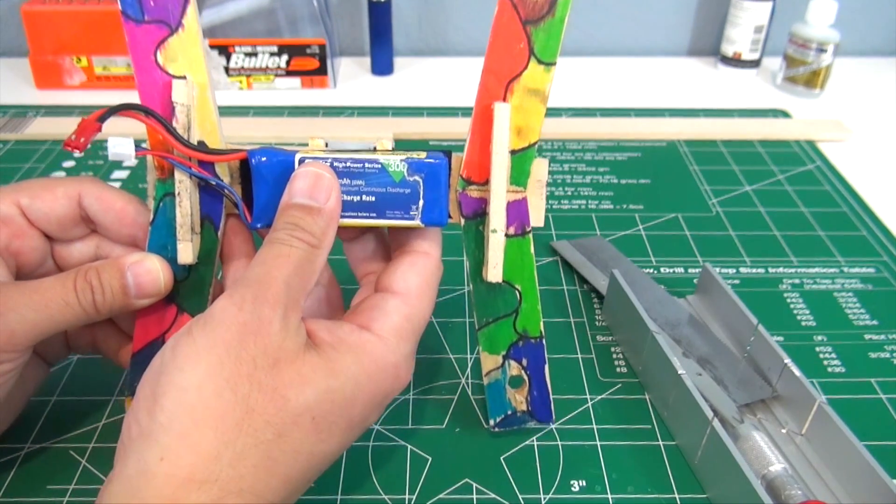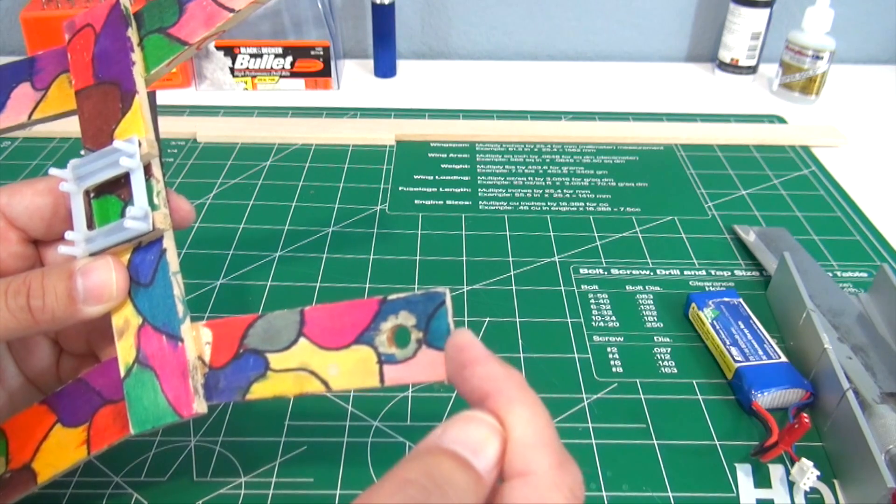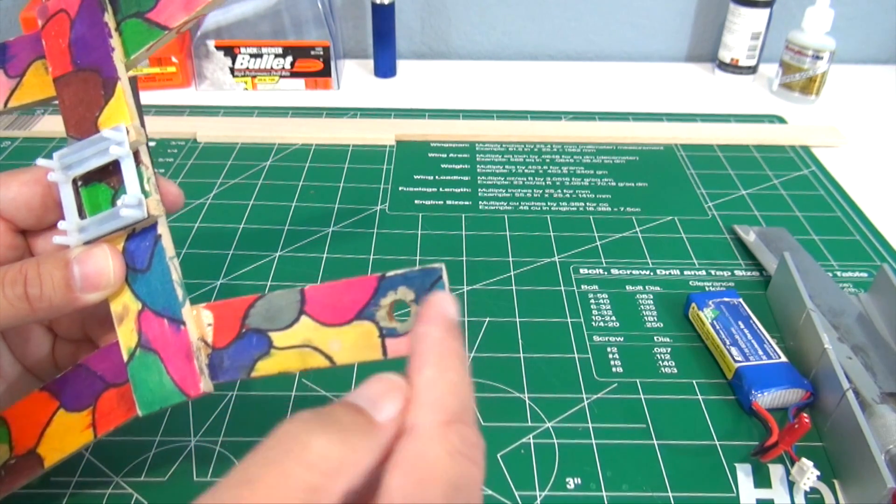All right, so let's talk about the motor mounting hole right here. 15 millimeters from the tip of the arm to the center of the motor mounting hole, 15 millimeters, and then you want to have it centered obviously front to back.